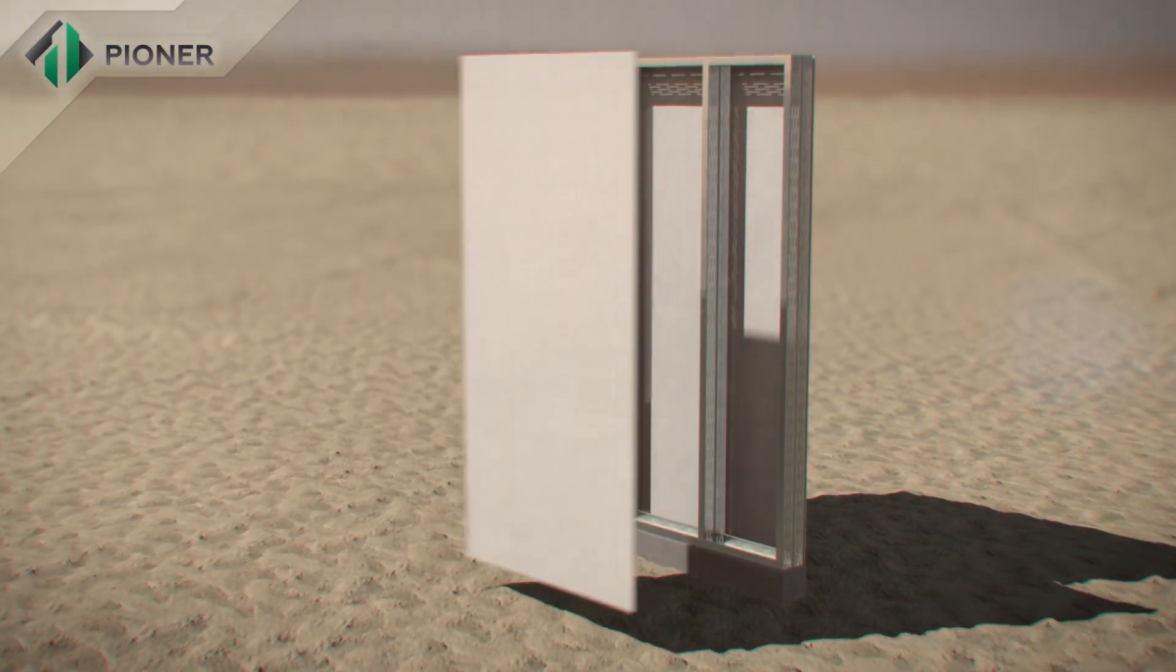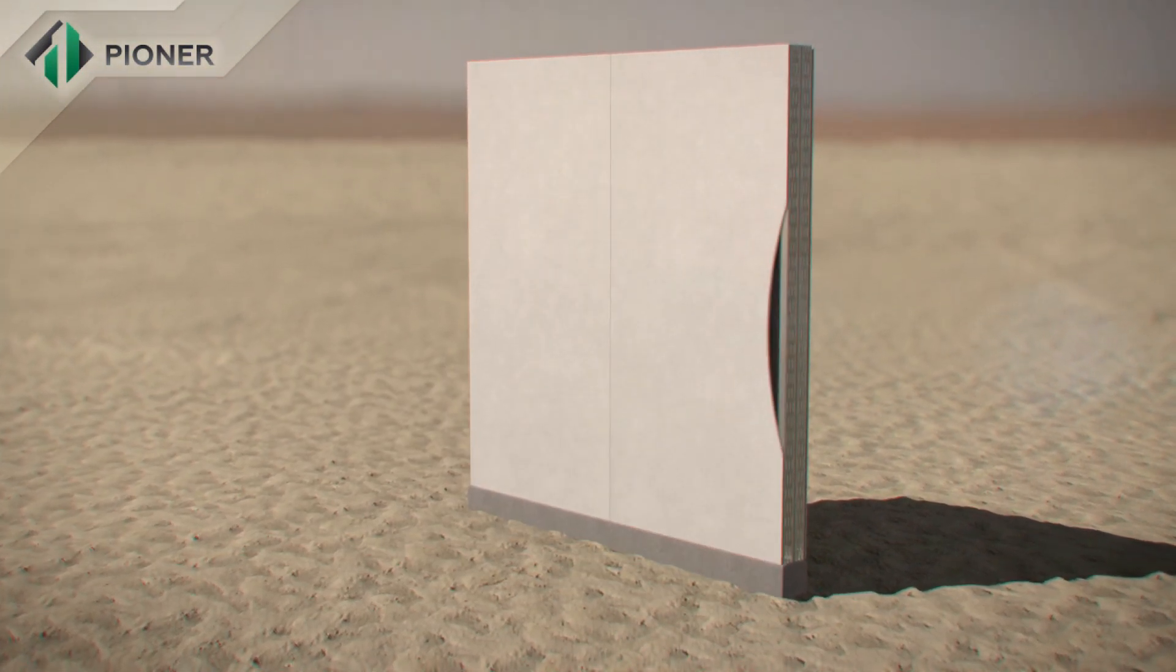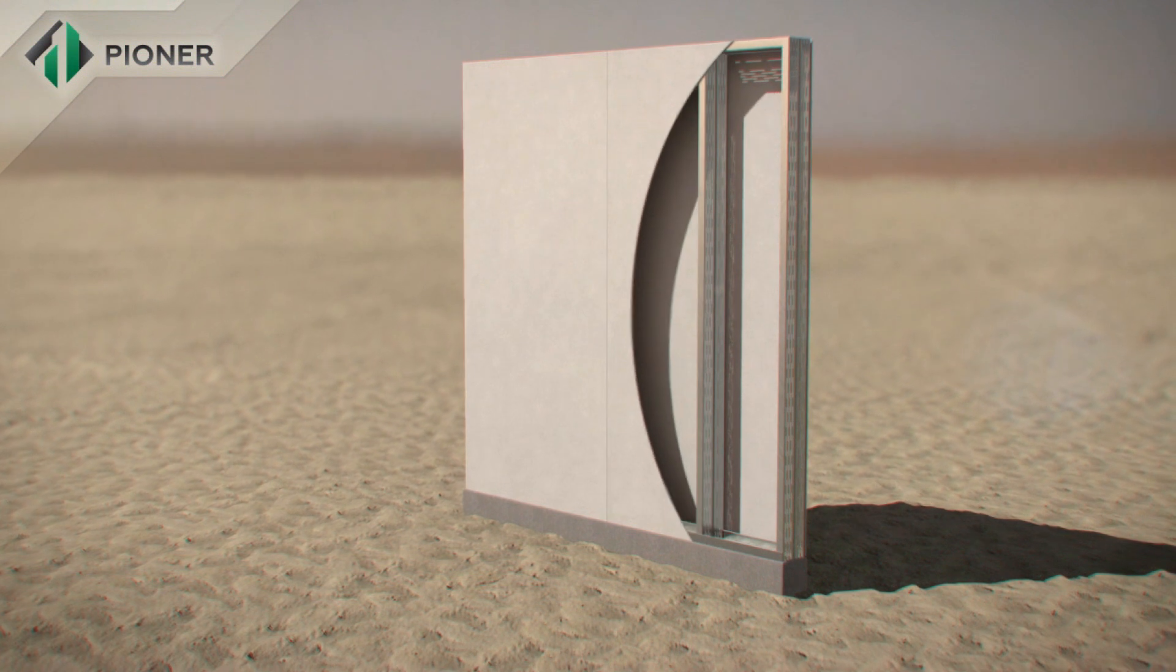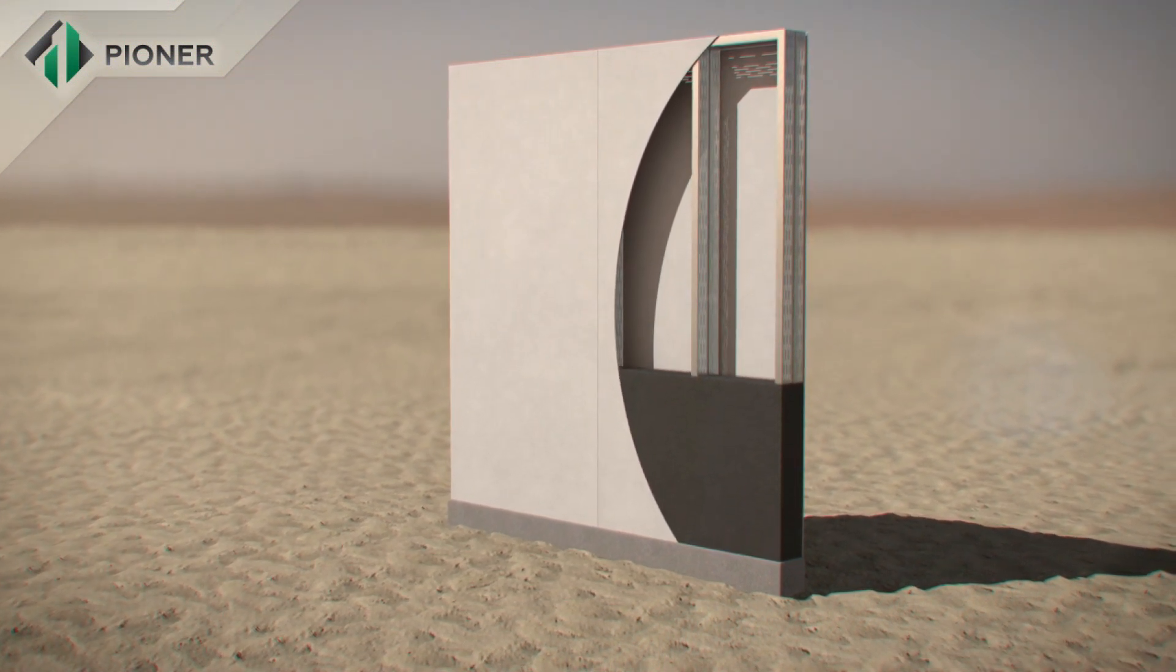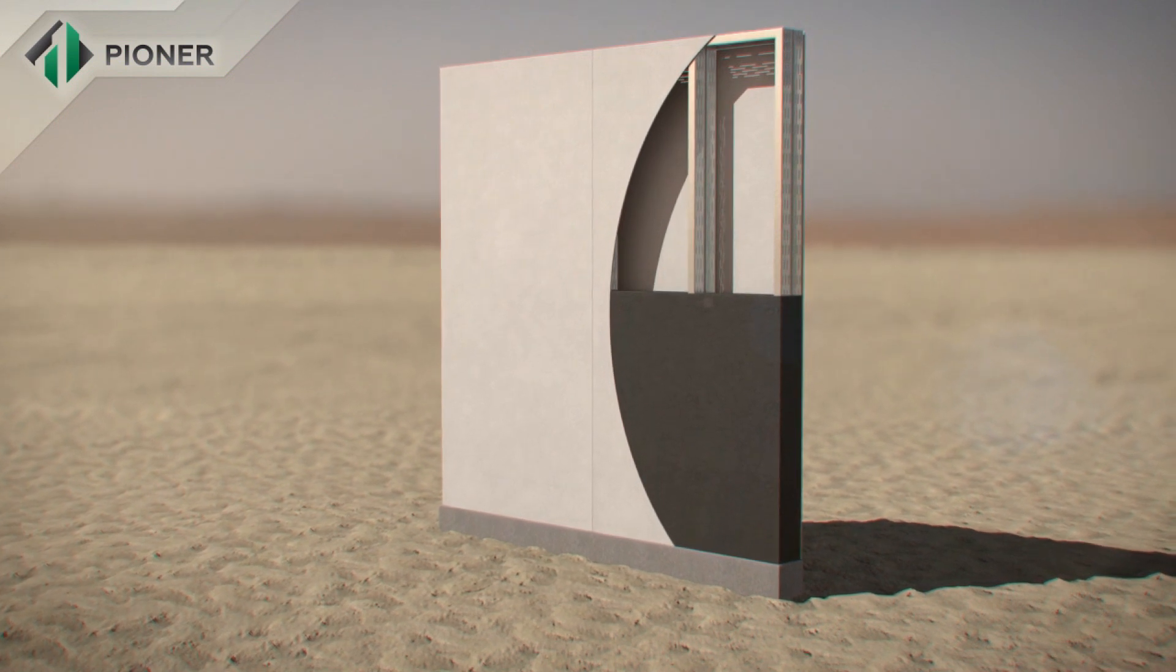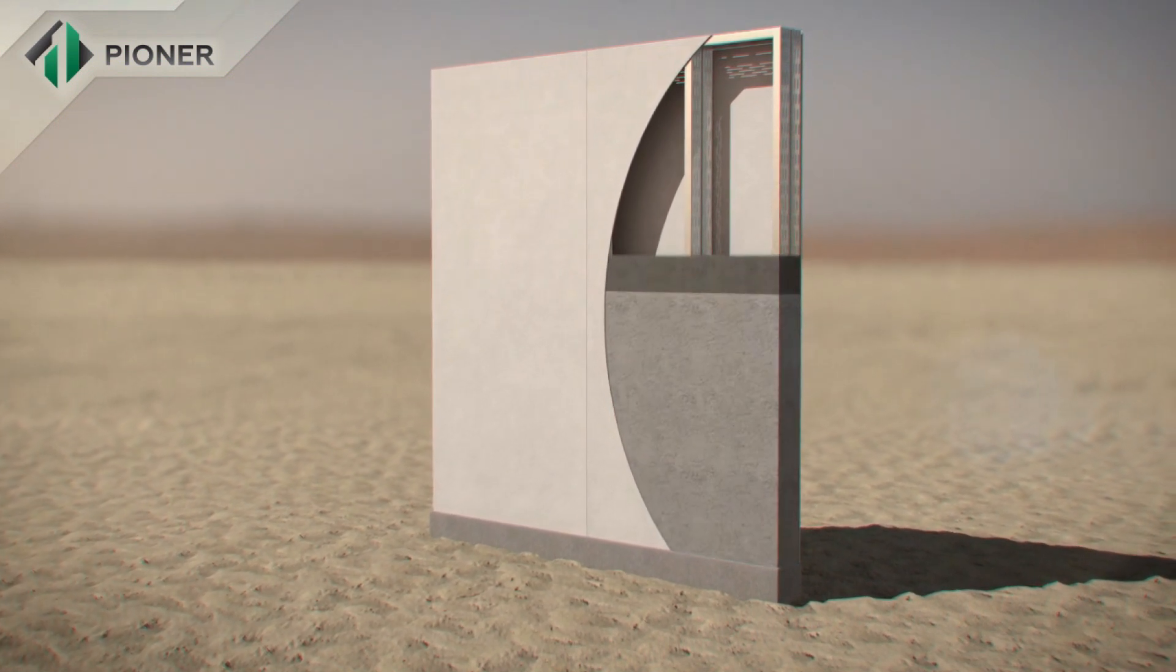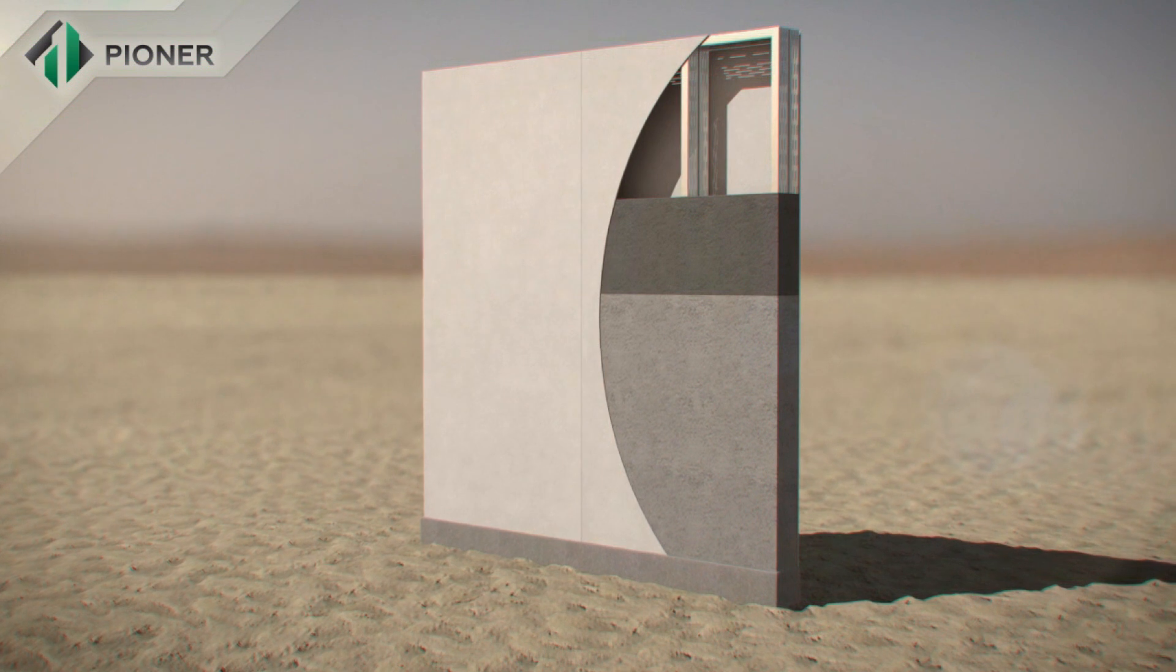A metal frame composed of bent galvanized profile mounted on a prepared foundation is the basis of Pioneer construction technology. Heavy combined fiber cement panels serve as permanent cast framework inside and outside of the wall.